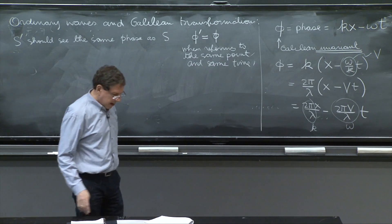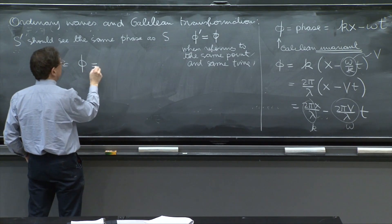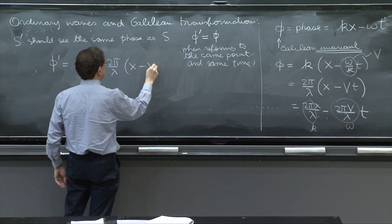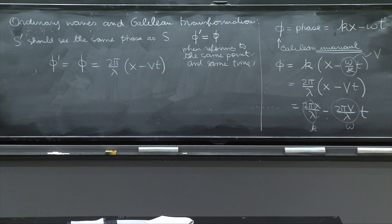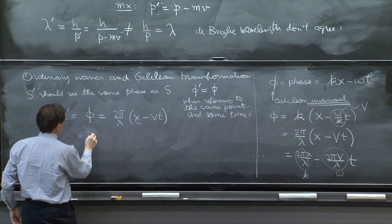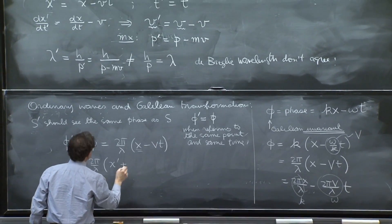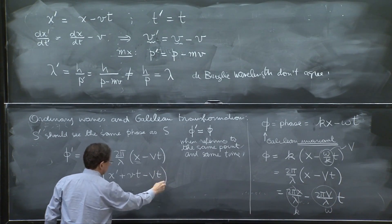So let's write this, so phi prime should be equal to phi. And phi, we've written it there, 2 pi over lambda x minus vt. And this is so far so good, but we want to write it in terms of quantities that S prime measures. So this x should be replaced by 2 pi over lambda x prime plus vt minus vt.